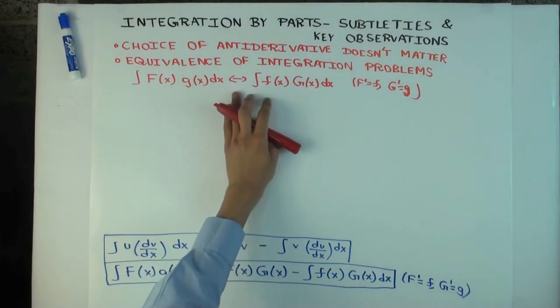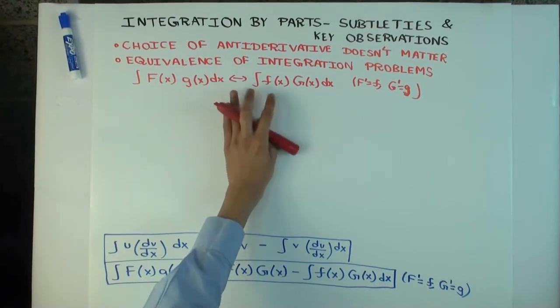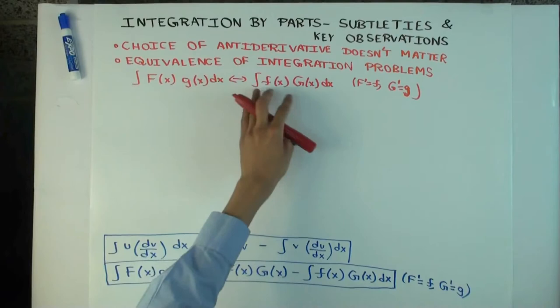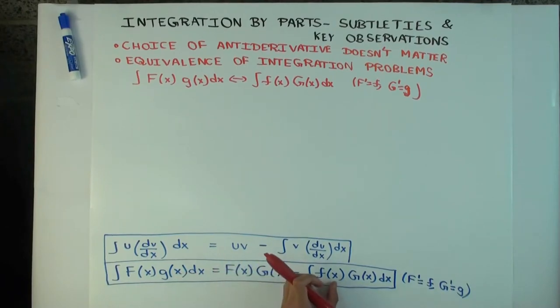Okay. So these two integration problems are equivalent. Now what I mean by saying that equivalent, what I mean is that if you know how to do one, you know how to do the other. It doesn't mean the answers are equal, because if you go to the actual formulas, then this integral is this function minus the other integral. Right? So it's not that the values are equal, but a strategy which tells you how to do one integral will also tell you how to do the other integral.